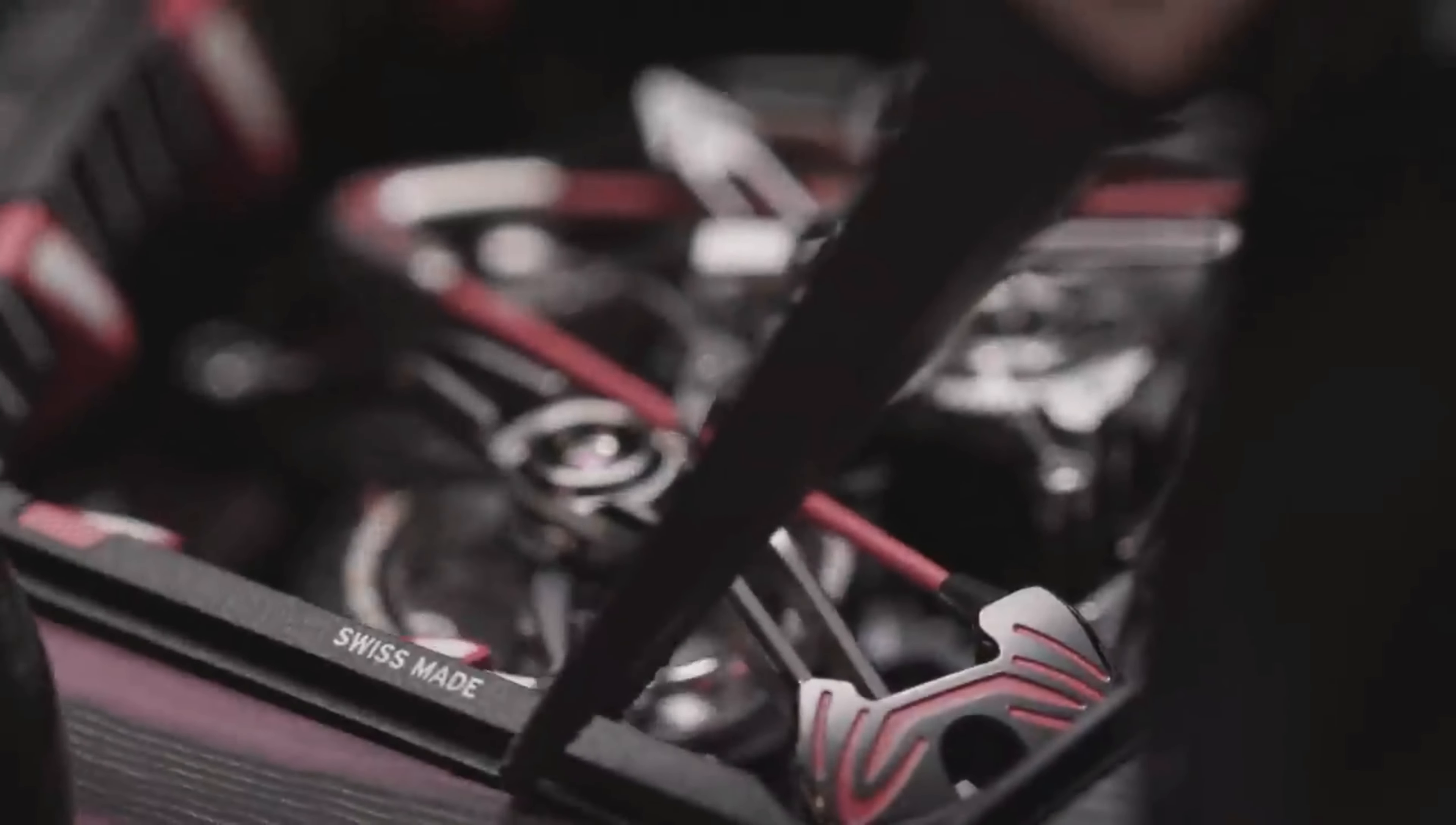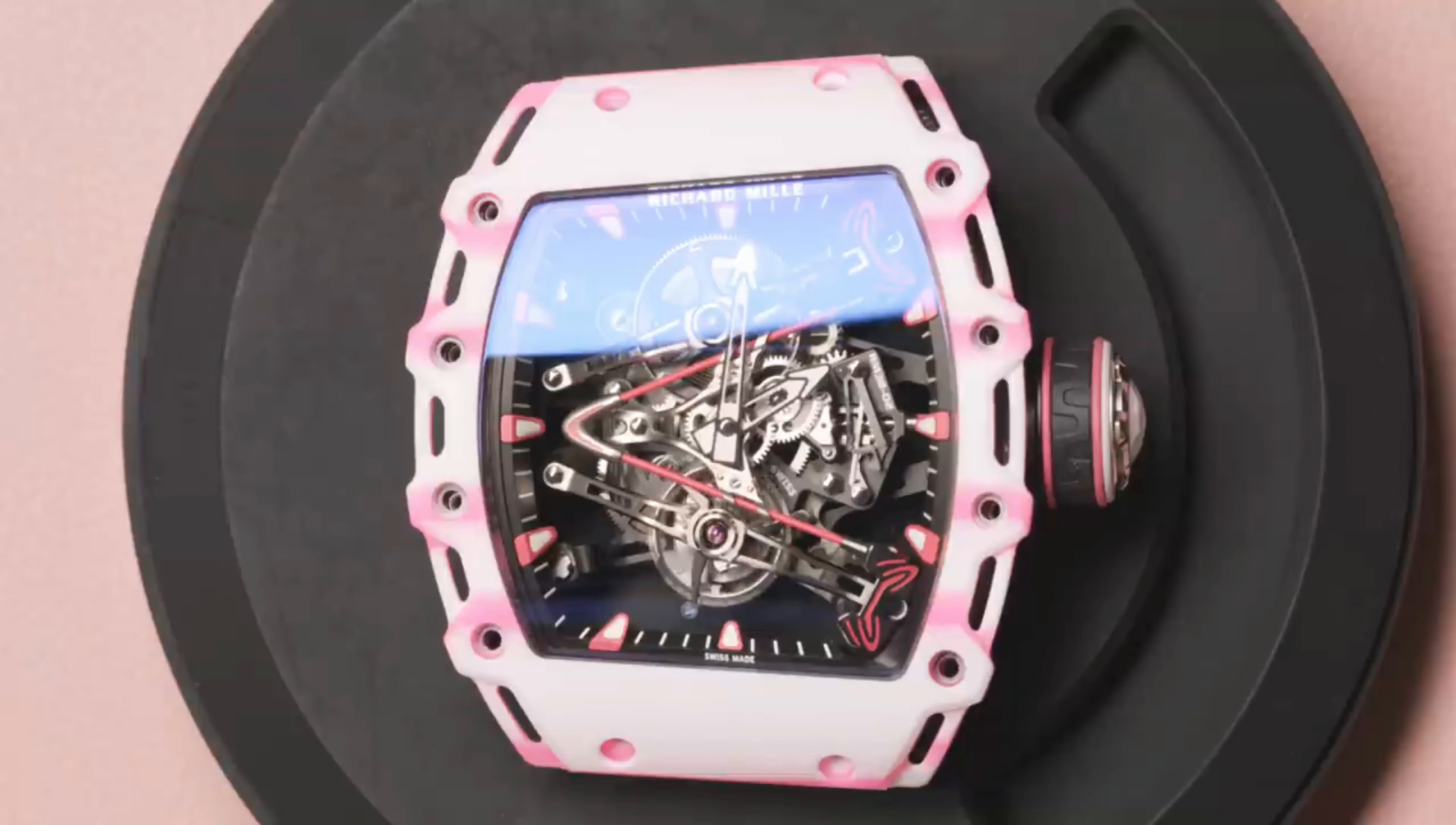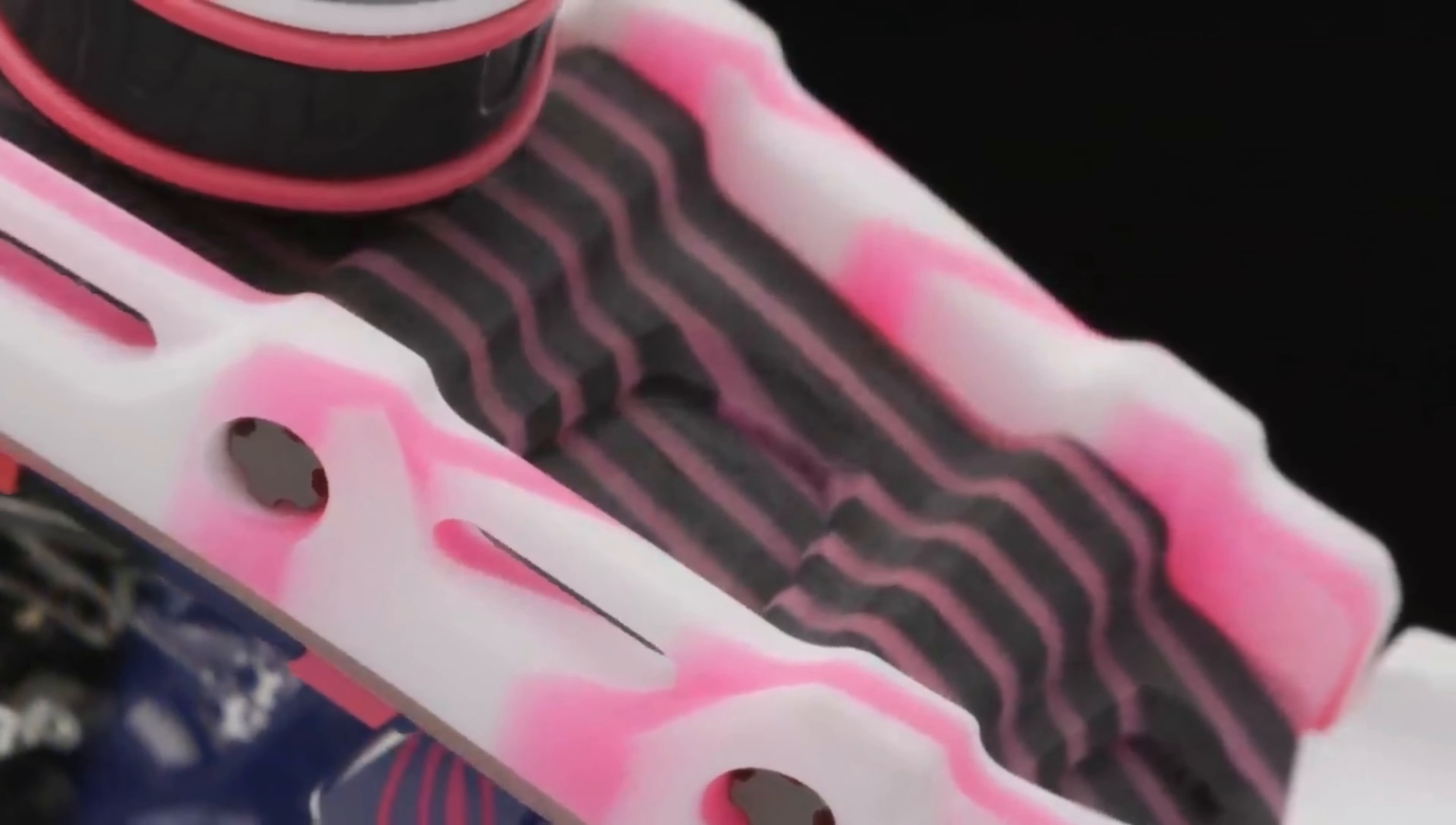Wearing a pink watch is a wish close to Bubba's heart from the first day of the partnership. Inside and out, the asymmetrical case is made of carbon TPT and a unique pink and white quartz TPT.